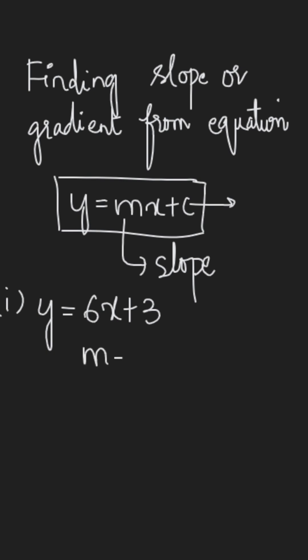However, when you have equations not in this form, for example 2x plus 3y equals 5, now this is a linear equation but not in the gradient form.